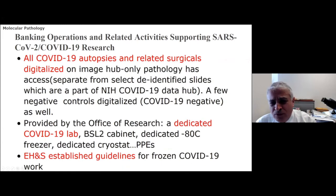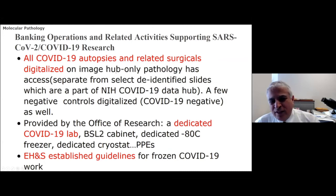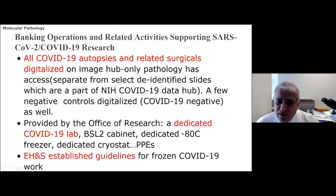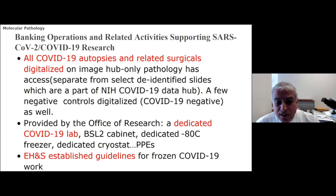All COVID-19 autopsies and related surgicals are digitalized and stored on IMCHUB. Access is currently restricted to the Department of Pathology to enable slide reviewing. Separately, select organs from these cases are de-identified and available to everyone as part of the NIH COVID-19 data hub that we participate in, including lung, liver, kidney tissues, and others — so all investigators can review these. There are also a few negative controls selected and digitalized to be used as controls for various experiments.